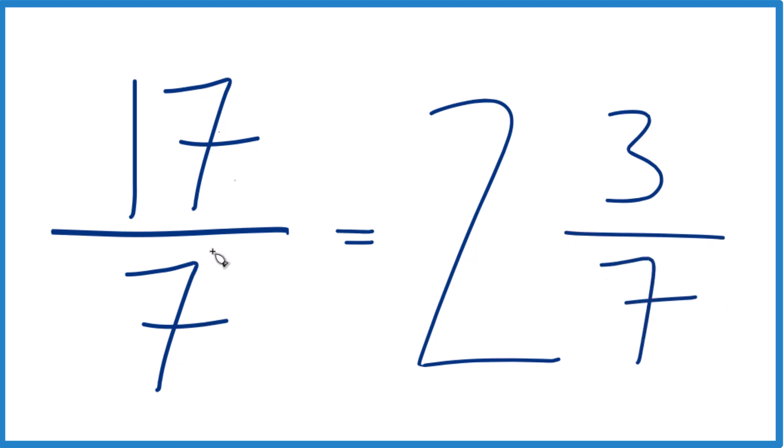So as a mixed number, 17 sevenths equals 2 and 3 sevenths. We can check that, too, because 2 times 7 is 14, 14 plus 3, that's the 17, then the 7, we just keep that the same.